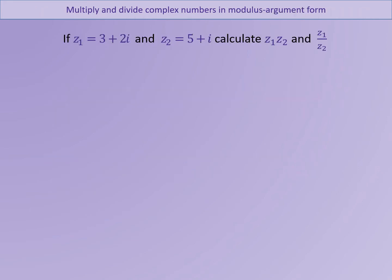We're going to start with two complex numbers. Z1 is 3 plus 2i and Z2 is 5 plus i. I'd like to find the product Z1·Z2 and the quotient Z1 divided by Z2. Pause the PowerPoint here to calculate those two things, and then when you're done, unpause to carry on.